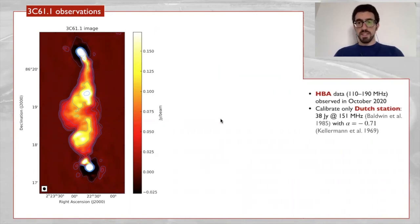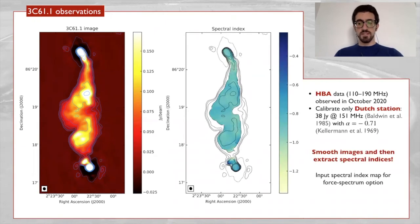We make images and we can extract the spectral index map from those images. You obtain this spectral index map and we input this map into the force spectrum option.